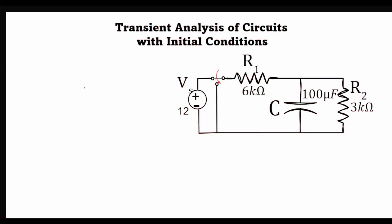Hello and welcome to T-Academy. In today's lecture we'll learn how to do transient analysis of circuits with initial conditions. We have a circuit here; initially the switch is at position 1, and at time t equals 0,